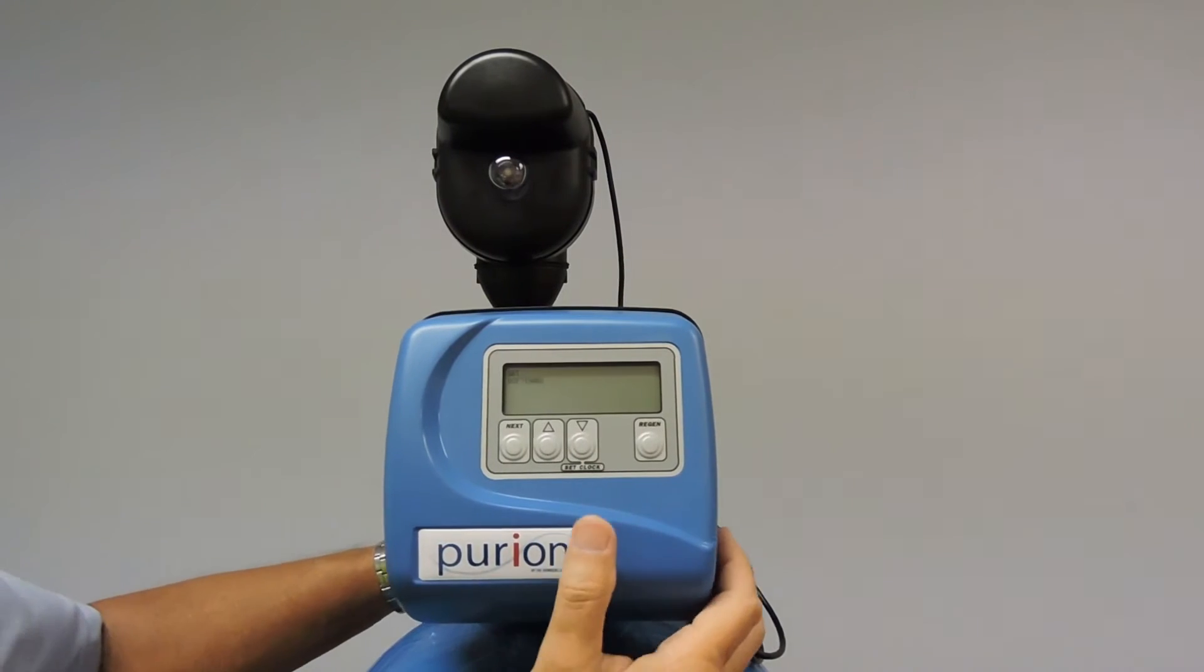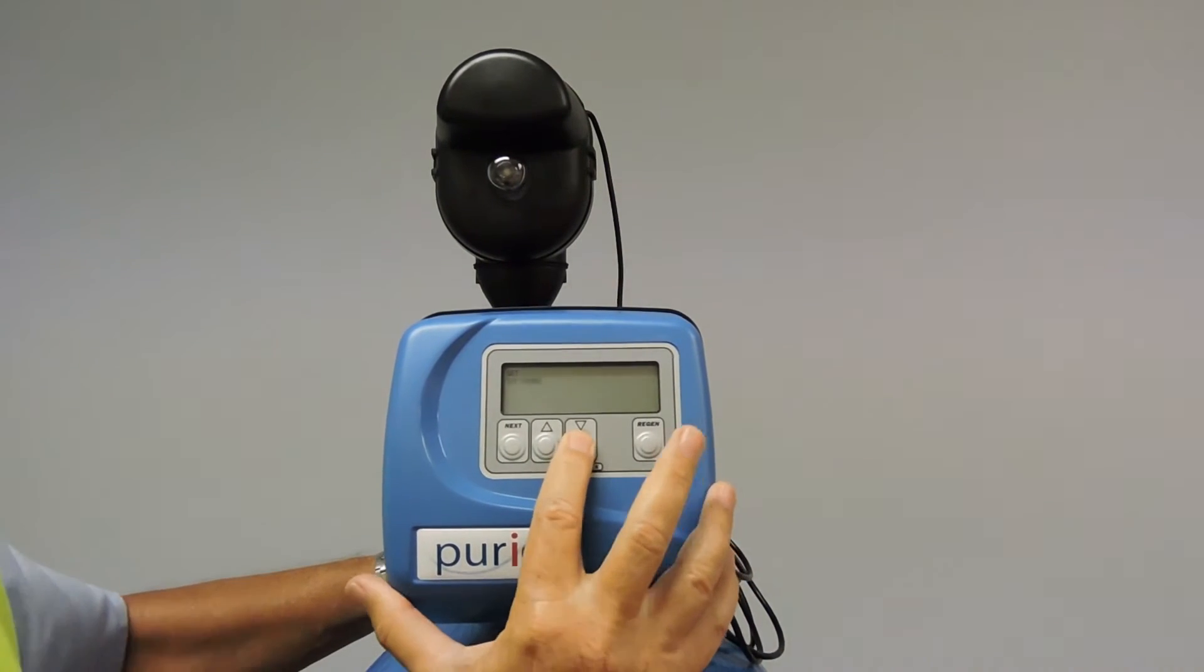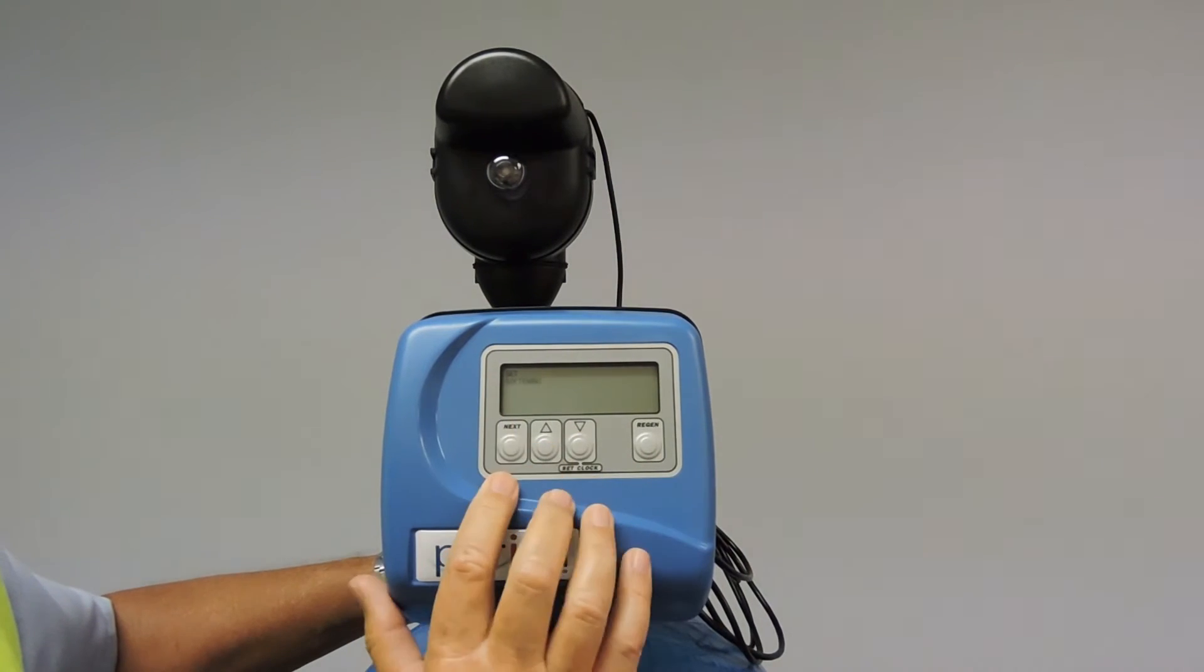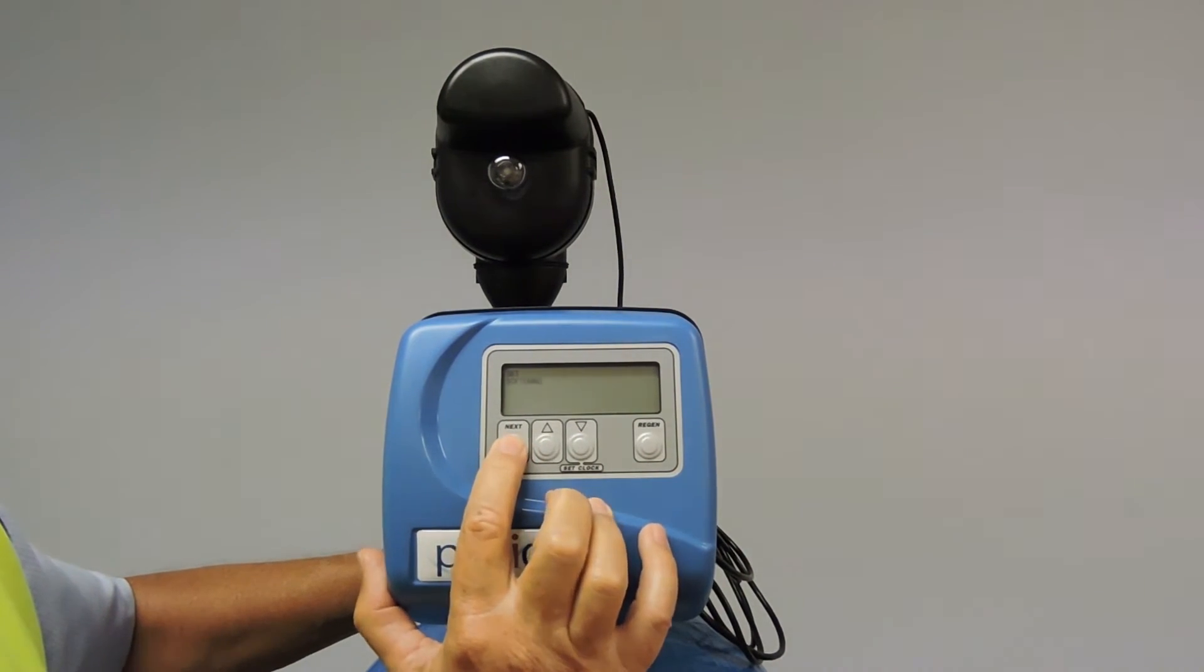That brings up softening. At this point here we're selecting it as a softener. The options there are filter, filter backwash, filter regen. And for our purpose, softening is what we want. Accept that by pressing on the next.